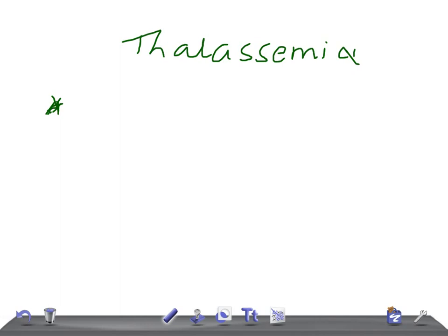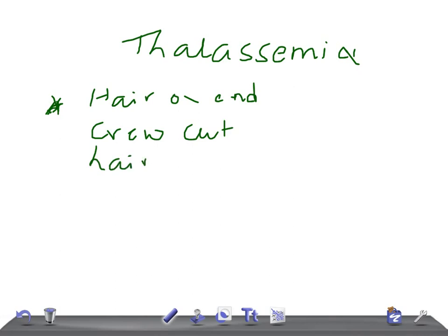Let's talk about what you call a hair-on-end appearance — hair-on-end, or crew cut. Just Google 'crew cut finding of thalassemia' and you will get a lot of images — hair brush appearance. These are really very important for USMLE. This is what you call diploic widening. Diploic widening is sparing the occiput — the occiput is spared — with the hair-on-end, crew cut, or hairbrush appearance.